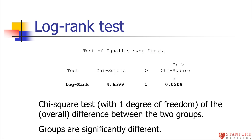I ran a log rank test on these data in a computer package. Actually doing the log rank test by hand is pretty tedious. A log rank test compares those two curves across all the time points at once. It's a chi-square test with one degree of freedom. It did come out to be statistically significant, saying that over all those time points there is a significant difference between the two groups.